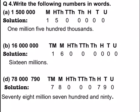Part B is 16,000,000. We draw the international place value chart — units, tens, hundreds, thousands, ten thousands, hundred thousands, millions, ten millions. We write in words: sixteen millions. Part D is 78,000,790. We write in words: seventy-eight million seven hundred and ninety.